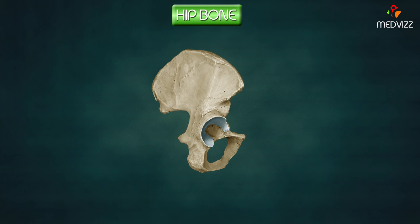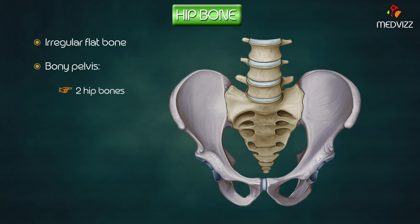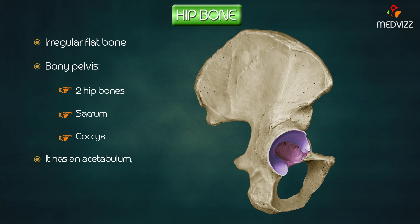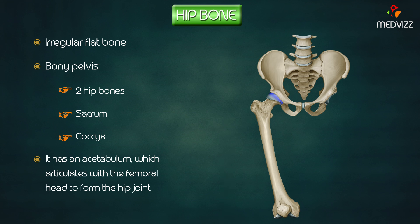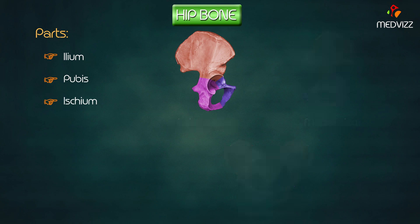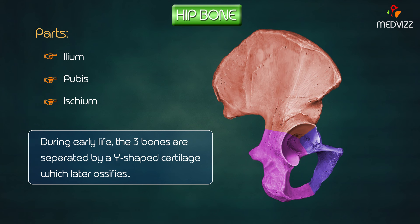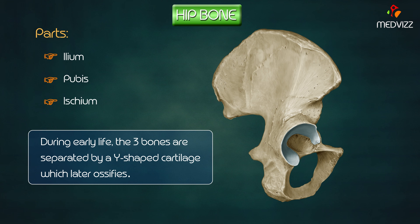The hip bone is a large irregular flat bone situated in the pelvic region. Two hip bones, along with the sacrum and coccyx, form the bony pelvis. It presents a cavity on its lateral side known as the acetabulum, which articulates with the head of the femur to form the hip joint. It has three separate parts: ilium, pubis, and ischium.